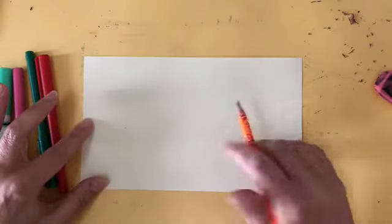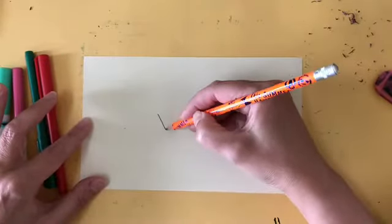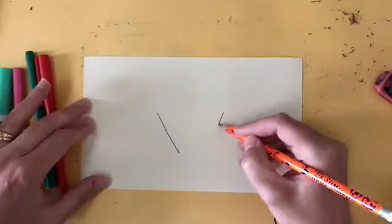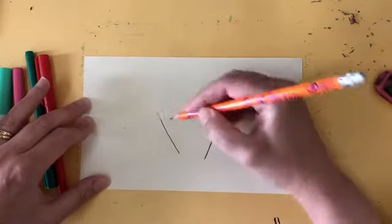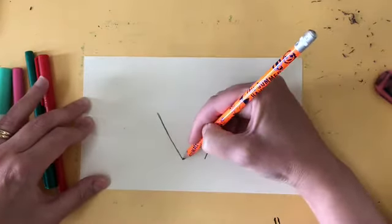So we're gonna start by drawing here and we're gonna have two diagonal lines and they're not gonna quite touch.